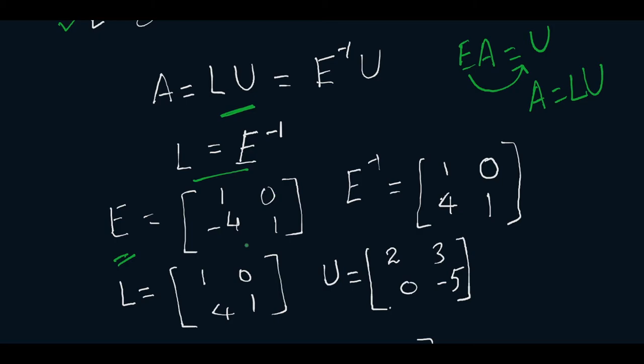Now we can easily find the inverse of this E matrix. E matrix is 1, 0, minus 4, 1. So E inverse will be nothing but 1, 0, 4, 1. Again if you don't know how to find the inverse please check our previous topic. So this is our L matrix which is nothing but E inverse and this is our U matrix.